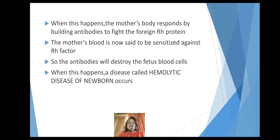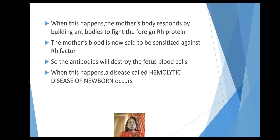When this happens, the mother's body responds by building antibodies to fight the foreign RH protein. We already said the RH negative woman does not have the RH protein, and now she's carrying a baby that has the RH protein — a baby that is RH positive. So when there's an exchange of blood between the mother and the baby, the mother tries to fight the RH protein by developing antibodies. The mother's blood is now said to be sensitized against RH factor, and those antibodies will destroy the fetus's blood cells.